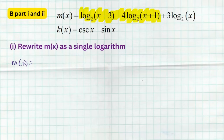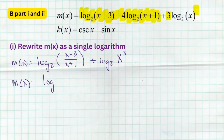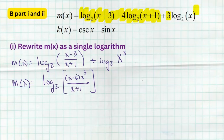When you subtract logs, you can divide the arguments: log base 2 of (x − 3)/(x + 1). Then take the coefficient 3 and apply the power rule to get plus log base 2 of x³. Now use the addition rule, which combines addition of two logs with multiplication inside. So m(x) = log base 2 of [(x − 3) · x³ / (x + 1)], all inside one log.